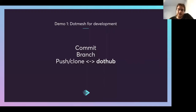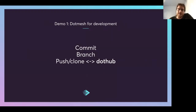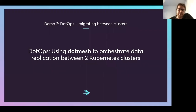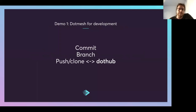So I'll pause there. I've got two demos. The first demo is the development side of the house — I'll show commits, branches, push and clone to and from the dot hub. The second demo is what I call a 'dot ops' demo, which is migrating and orchestrating data replication between two separate Kubernetes clusters. But before the demos, are there any questions on the content so far?